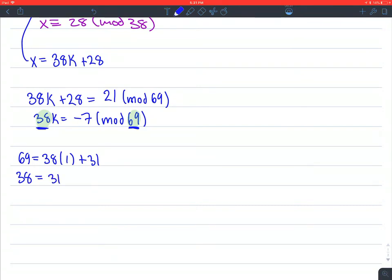38 equals 31 times 1 plus 7. And then now you carry down the 31 equals 7 times 4 plus 3. And then you carry down the 7. 7 equals 3 times 2 plus 1. And then now finally we get 3 equals 1 times 3 plus 0.